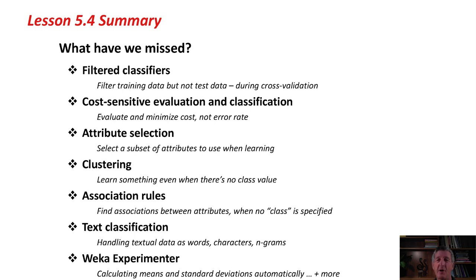We haven't talked about costs of different decisions and different kinds of errors. But in real life, different errors have got different costs. We've talked about optimizing the error rate or the classification accuracy, but really in most situations we should be talking about costs, not raw accuracy figures. These are different things.